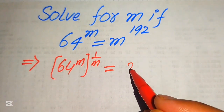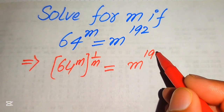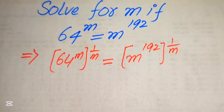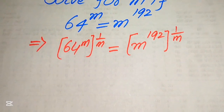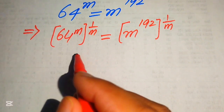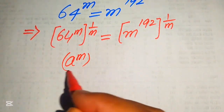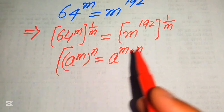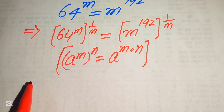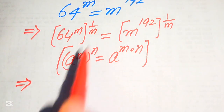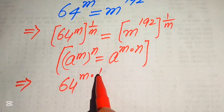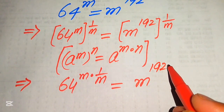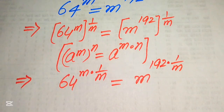When we take 1 over m power on both sides, it is written as m to the power of 192, and its whole power is 1 over m. We apply the exponent law: a to the power of m to the power of n equals a to the power of m multiplied by n. According to this law, we multiply the two exponents: 64 to the power of m multiplied by 1 over m, equals m to the power of 192 multiplied by 1 over m.